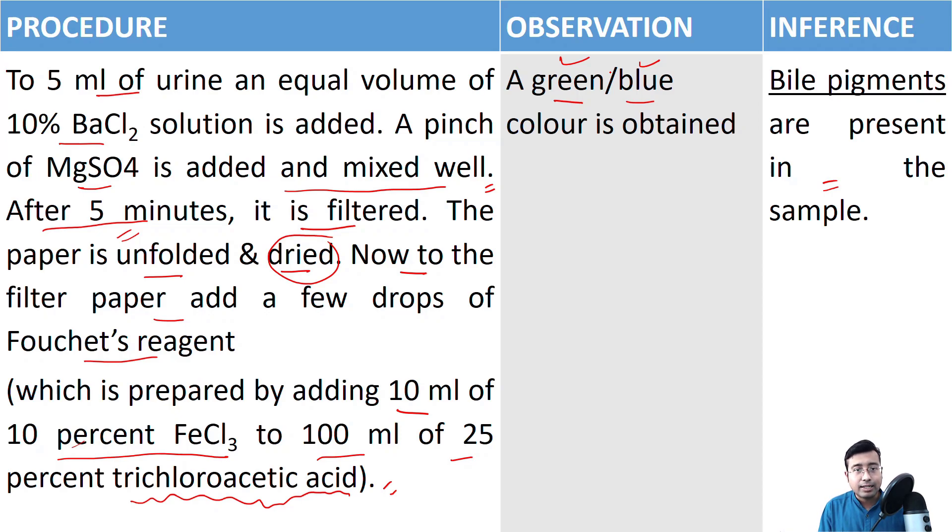This is Fouchet's test. It takes a lot of time. Therefore, we always say, no matter what, because in exam, you need to do all the tests and then find the abnormal constituents one by one. So always start with Fouchet's test. First, start with Fouchet's test. Mix the urine, barium chloride and magnesium sulphate. Then leave it for five minutes.